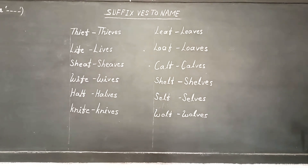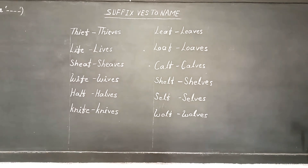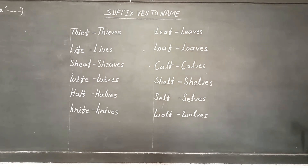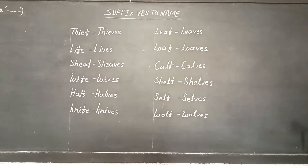Listen carefully. If any word's last alphabet is F or FE, and we want to make the plural number, then remove F or FE and then suffix VES for the plural number.